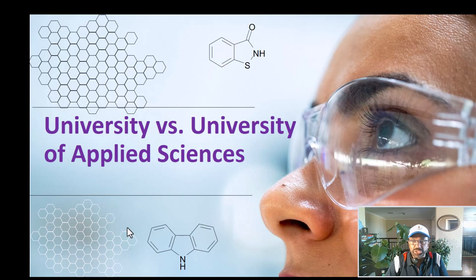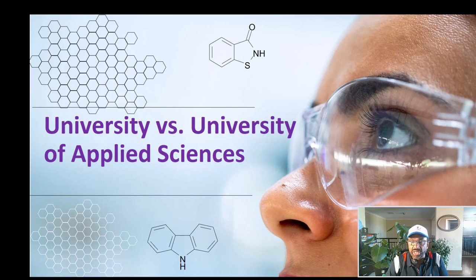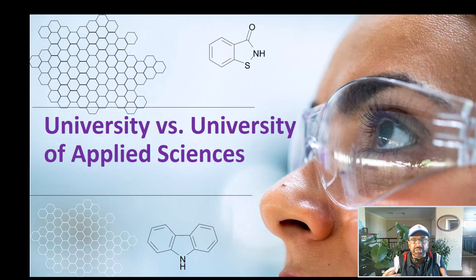It is also popular in other countries like Austria and Switzerland, where it is termed as Fachhochschule in German. France also has similar systems, and it is very common in Scandinavian countries like Finland. However, University of Applied Sciences are not that common in English speaking countries. But what is the main difference? Let us go through it.